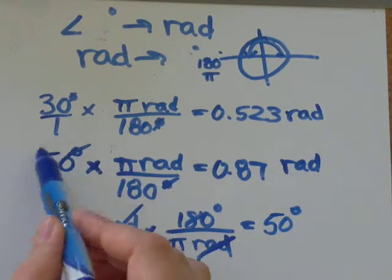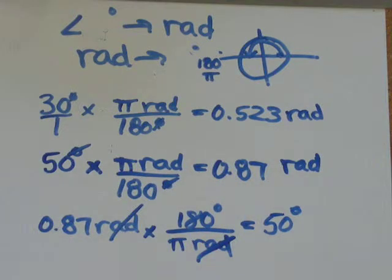Which is good because that's what we had over here when we calculated 0.87 radians. So the first question we did, we started with 30 degrees and we found that was equal to 0.523 radians. So let's try and do the reverse.